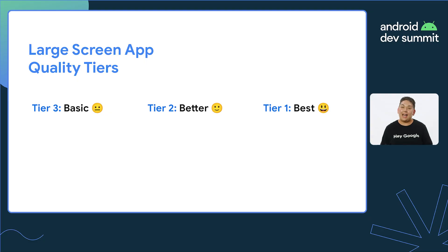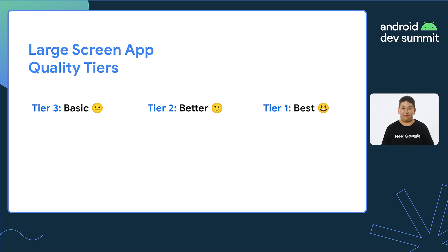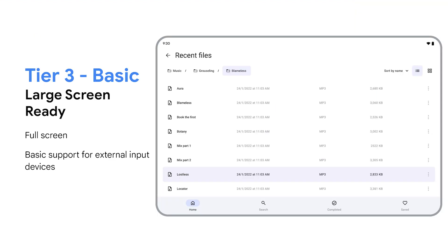To make things actionable and easy to follow for developers, we've broken our large screen quality guidance into three tiers. Tier three is basic support — your app will be full screen and fully usable on all display sizes. Your app UI and layout could look like a blown-up version of your phone UI, but everything's functional.